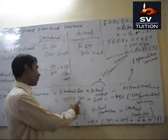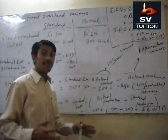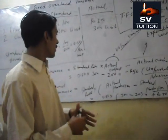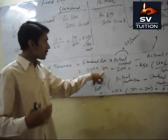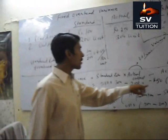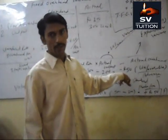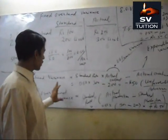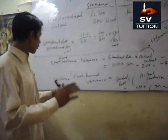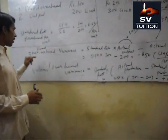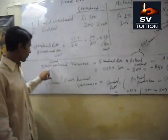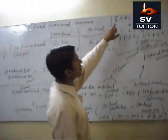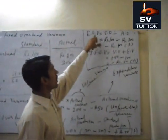If actual output increases due to more efficient work — for example, if it becomes 600 units — then our variance will be favorable. Now we will calculate two more variances which are part of fixed overhead variance: one is volume fixed overhead variance, and the second is expenditure fixed overhead variance.